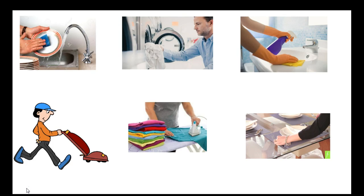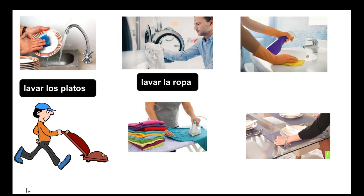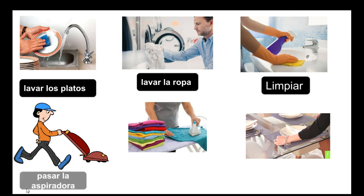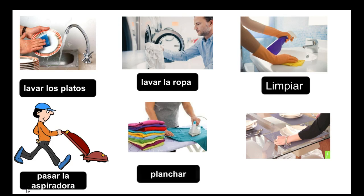¿Cómo se dice 'to wash the dishes'? Lavar los platos. ¿Cómo se dice 'to wash the clothes'? Lavar la ropa. ¿Cómo se dice 'to clean the bathroom' — or to clean? Limpiar. ¿Cómo se dice 'to vacuum'? Pasar la aspiradora. ¿Cómo se dice 'to iron'? Planchar. ¿Cómo se dice 'to set the table'? Poner la mesa.